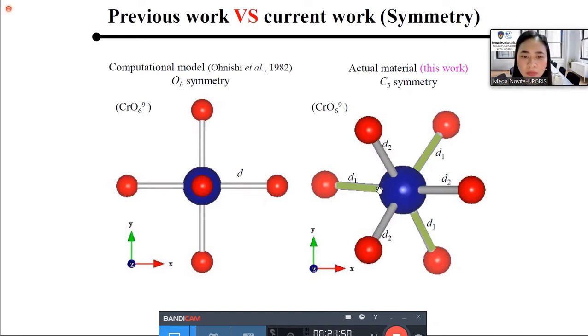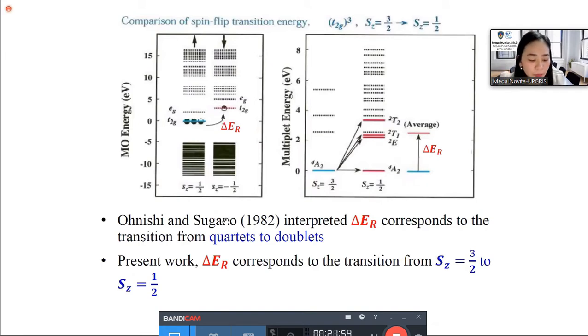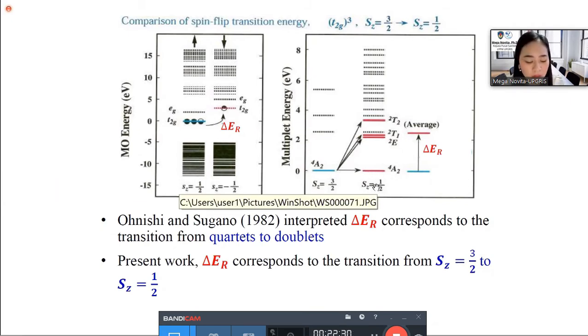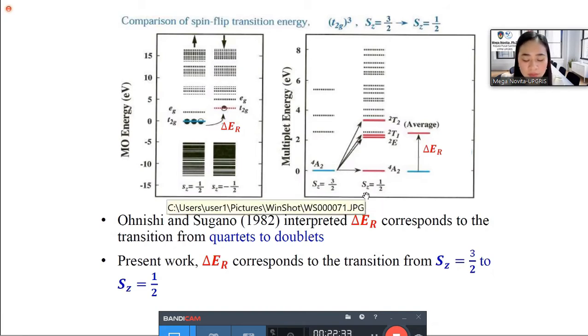So in the work of Onishi and Sugano, they interpreted R-line to the transition from quartets to the doublet. However, if we see carefully, delta ER is the spin flip transition energy based on one electron calculation from T2G upspin to T2G downspin. That is a transition with spin states Sz=1/2 to Sz=-1/2. And this is actually just a reverse component. However, in the actual materials, the transition is occurred between spin state Sz=3/2 to Sz=1/2. Therefore, delta ER should correspond to the gravity center of the four states here, including quartet A2. Then the transition from quartet A2 to quartet A2 is also considered.